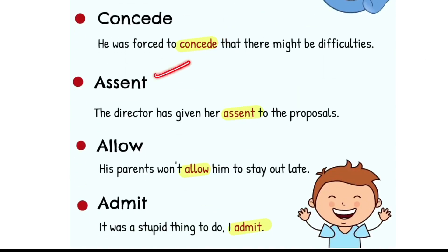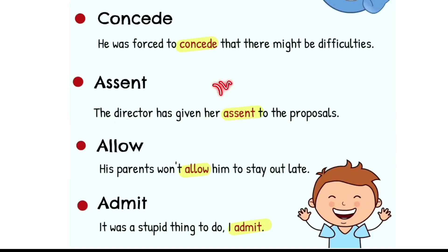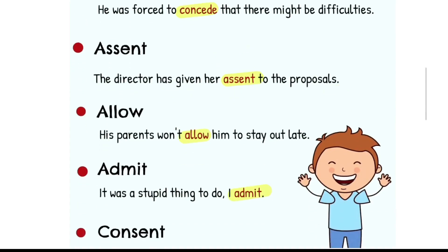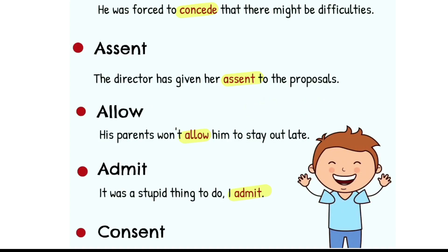Assent. The director has given her assent to the proposal. Matlab approval mil gya hai. Allow ka matlab hai again permission dena, kind of agree hona. His parents won't allow him to stay out late.